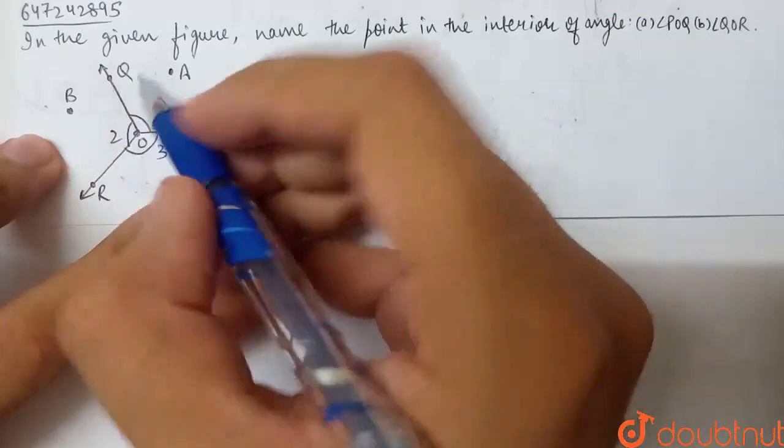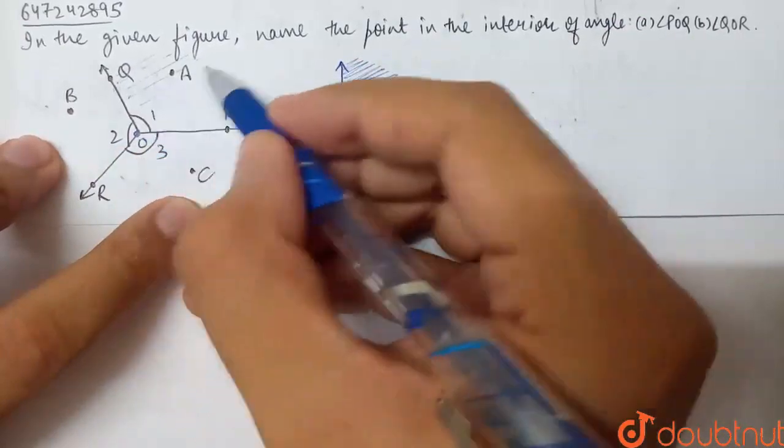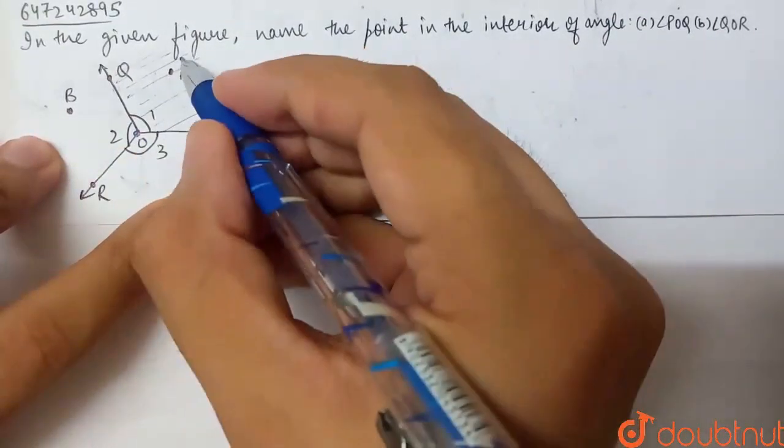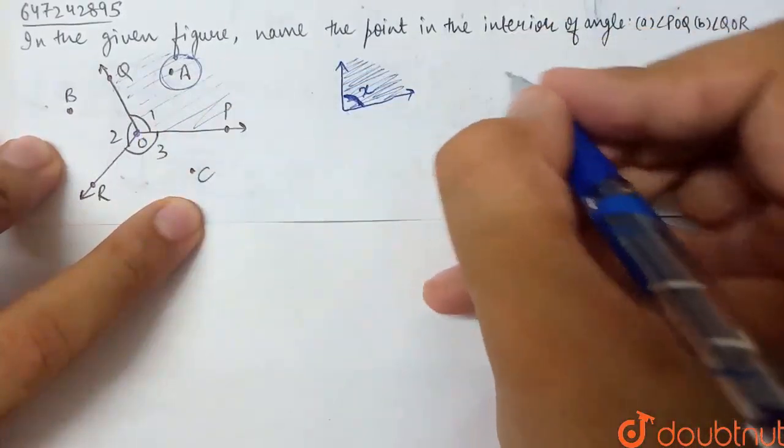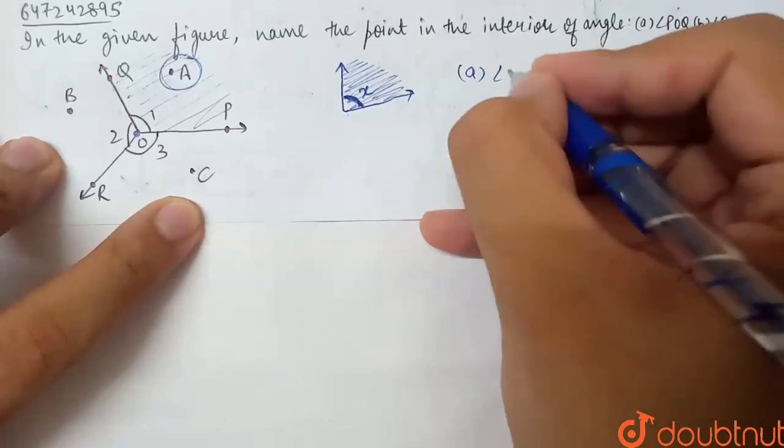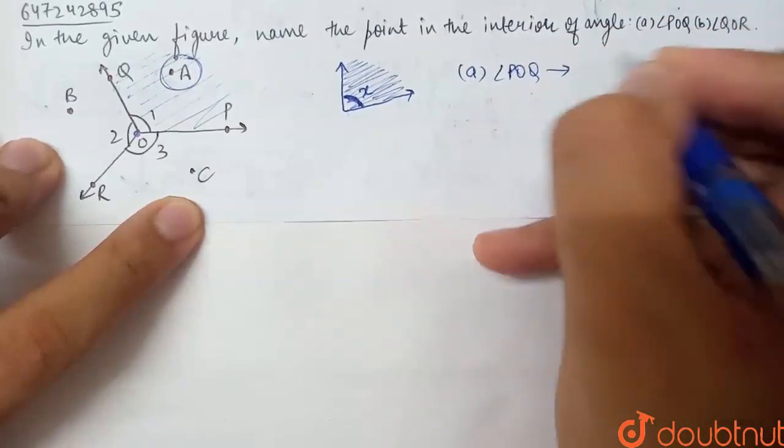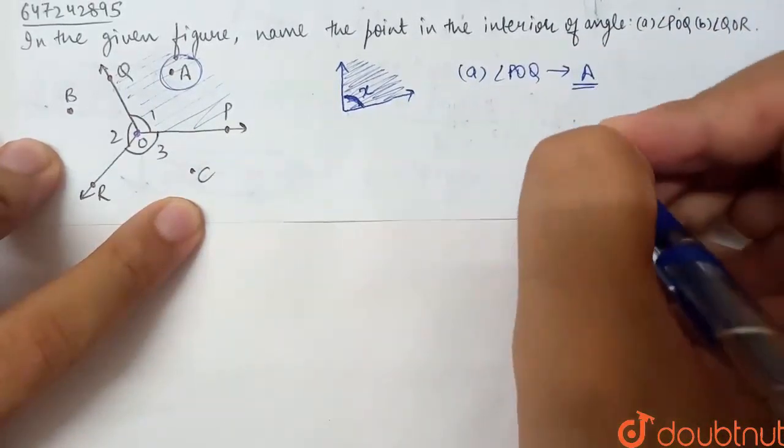So, POQ. What is the interior of this region? What is the point in it? I see this one point. So, what is the point in it? Point A. Therefore, angle POQ's interior point is A.